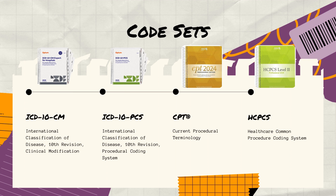There are four different code sets I want to highlight today. There are more code sets than what is shown on this slide, but when we're talking about medical coding for reimbursement purposes, these are the ones that are utilized. First we have ICD-10-CM, which stands for the International Classification of Disease, 10th Revision, Clinical Modification. Then we have ICD-10-PCS — International Classification of Disease, 10th Revision, Procedural Coding System. Next is CPT, the Current Procedural Terminology. And lastly we have HCPCS, pronounced as an acronym, which stands for the Healthcare Common Procedure Coding System.